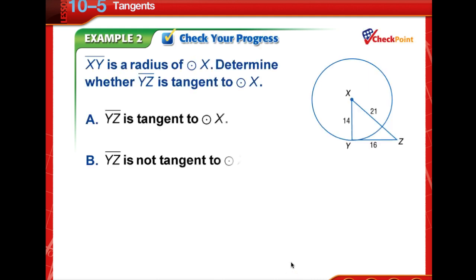So check your progress. Pause the video for a moment and determine whether or not segment YZ is a tangent to circle X. It is not a tangent. When I calculate, use Pythagorean Theorem, 14 squared plus 16 squared equals 21 squared, I get 452, which is not equal to 441, so we don't have a right triangle here.